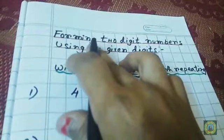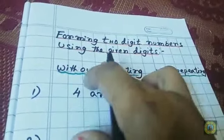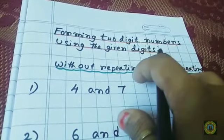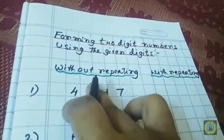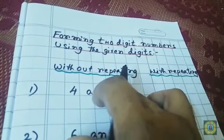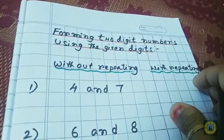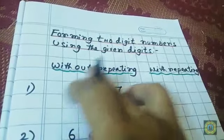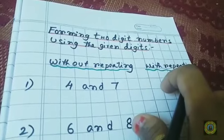Today we will learn forming two-digit numbers using the given digits. We will understand with the help of two groups: without repeating the digits, and with repeating the digits. First: without repeating. Second: with repeating.